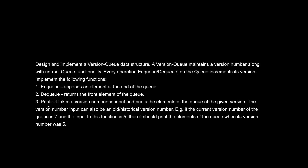There is also a print API which you have to implement. It basically takes a version number as input and prints the elements of the queue at that given version. The version number input can also be an old historical version. For example, if the current version number of the queue is 7 and the input to this function is 5, then it should print the elements of the queue when its version number was 5.